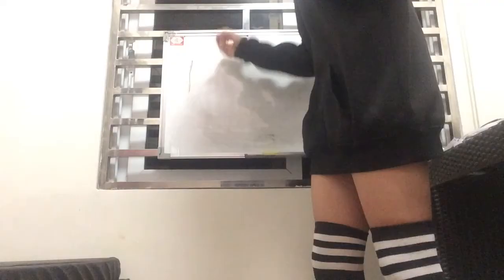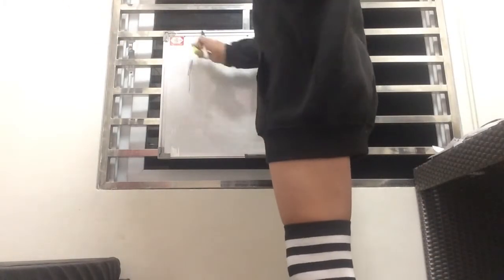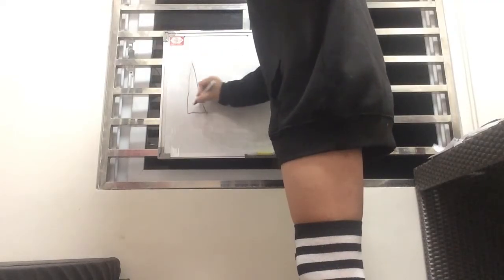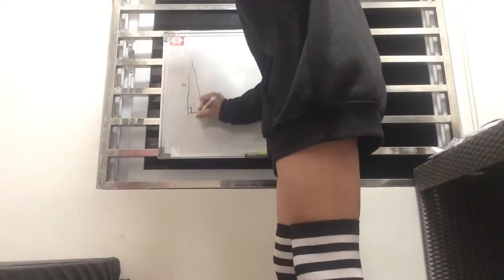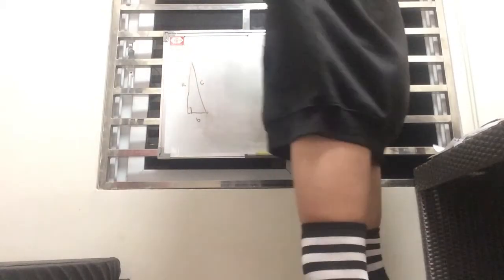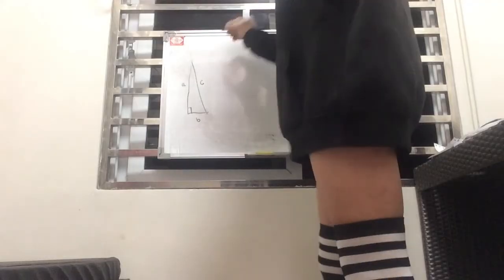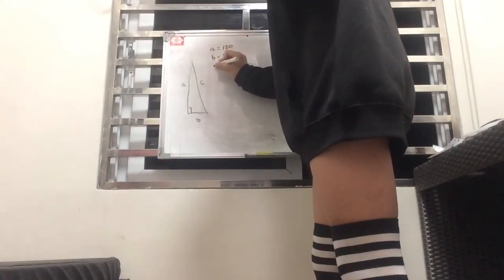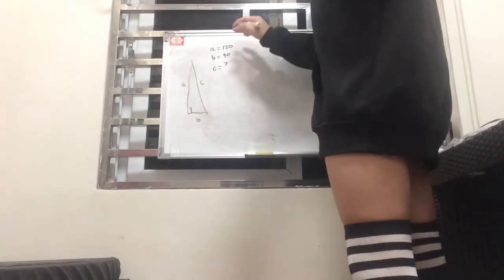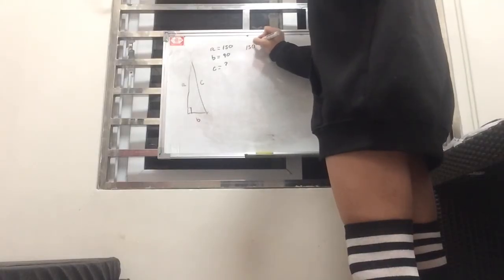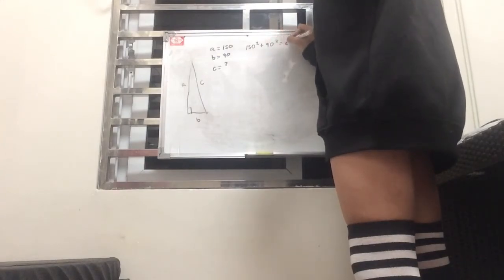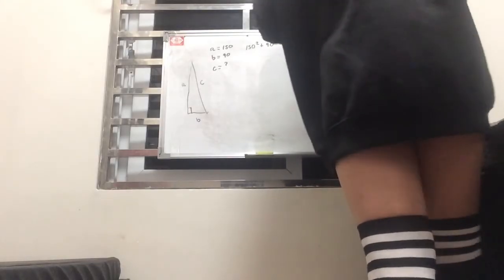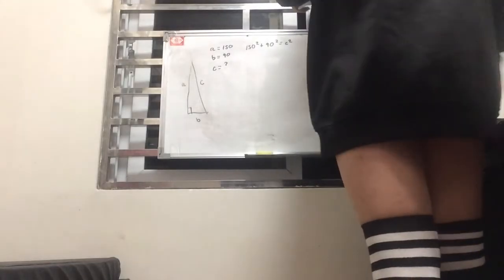Let's say we're given this right triangle over here and we have our legs a and b and our hypotenuse c, which is supposed to be the longest side. Let's say that a is 150, b is 90, and c we don't know. So how do you find c? Basically we just plug these two numbers into the equation.